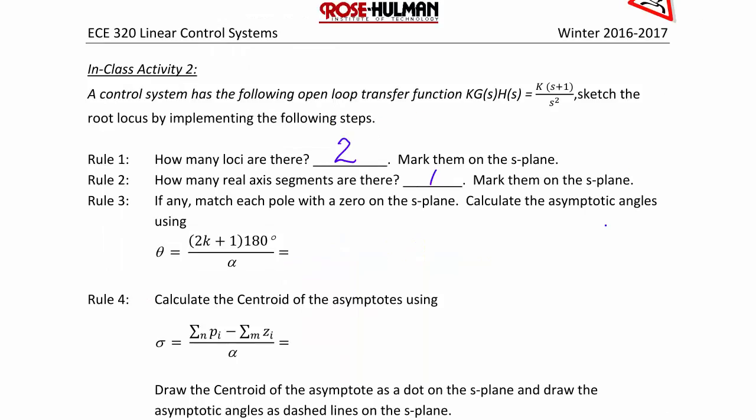So now let's go back to our next rule. Rule 3, if any, match each pole with a zero on the s-plane and calculate the asymptotic angles using θ equals 2k plus 1 times 180 degrees divided by α. Recall that α is equal to n minus m, or the number of poles minus the number of zeros. So α equals 2 minus 1, or 1. So we have 2k plus 1 times 180 degrees over 1. So θ is equal to 180 degrees.